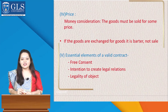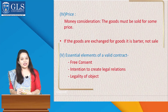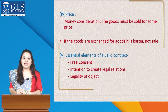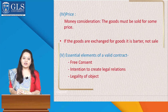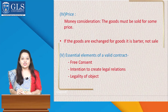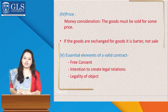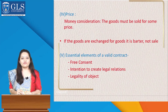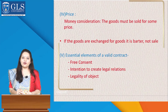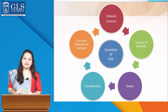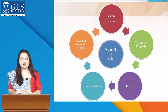Coming to the last essential of a valid contract of sale — as we know, sale is also a contract. In order to make a valid contract, there are certain essential elements required like free consent, intention to create legal relation, and legality of object. Just like any other contract, in a contract of sale all these essentials must be present, and then only it is called a contract of sale under the Sale of Goods Act 1930.